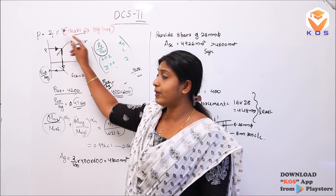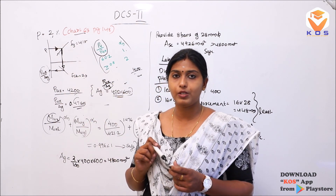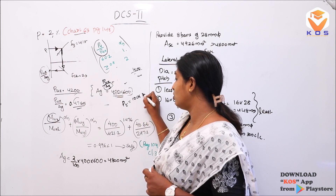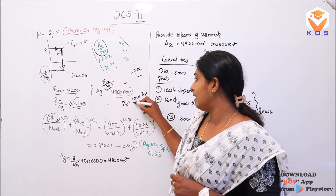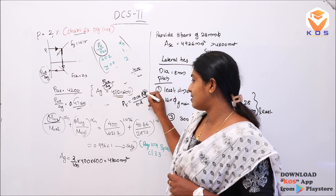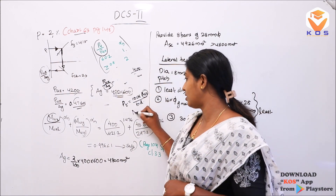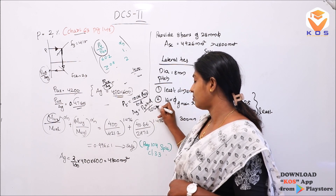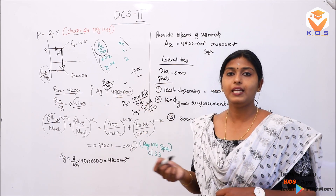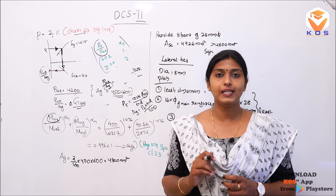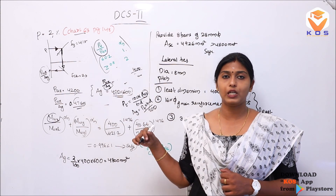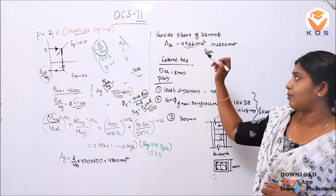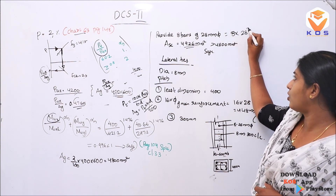We assume percentage reinforcement equal to 2%. The area of steel ASC = Pt × B × D / 100. Solving, we provide 8 bars of 25 mm diameter. AS = 4926 mm². This gives us the required reinforcement area for the column section.